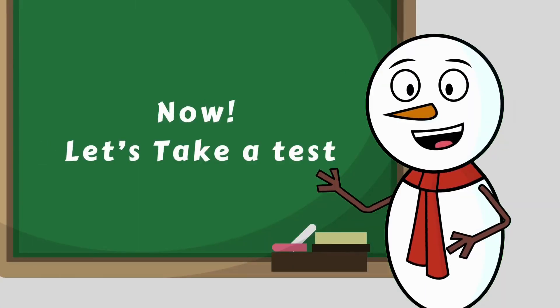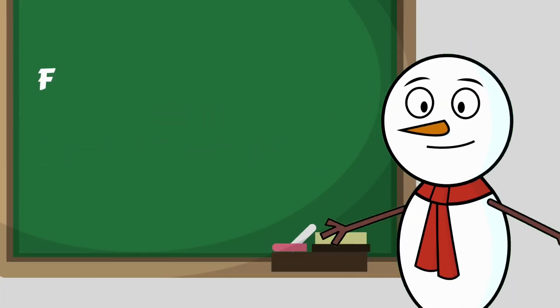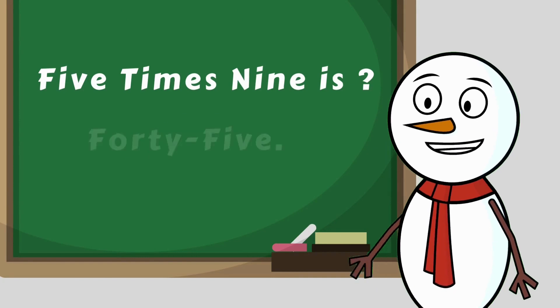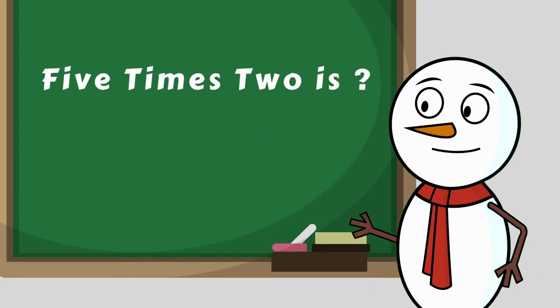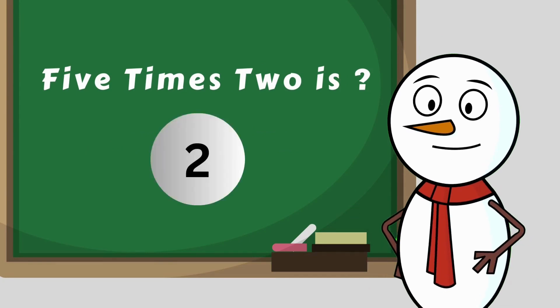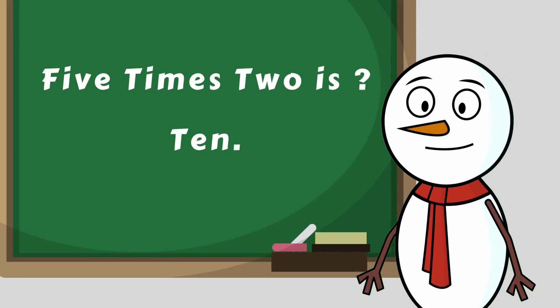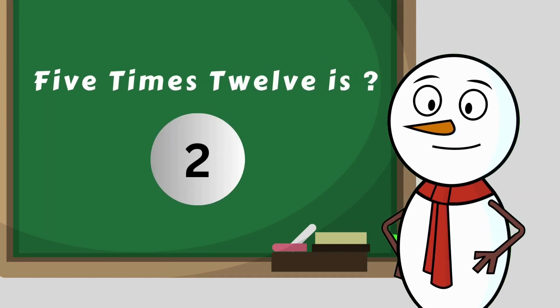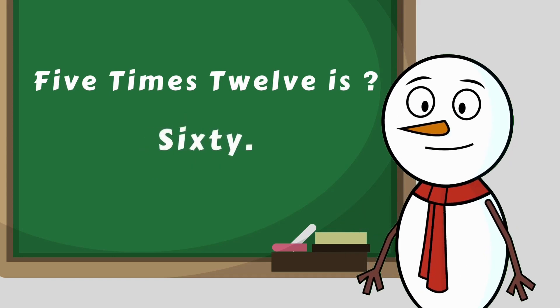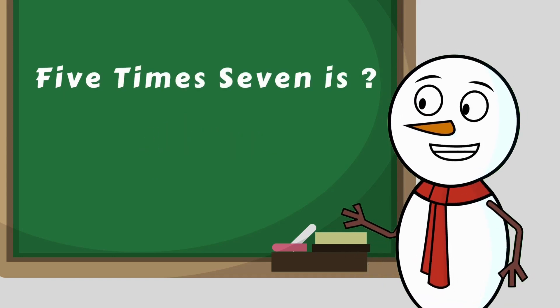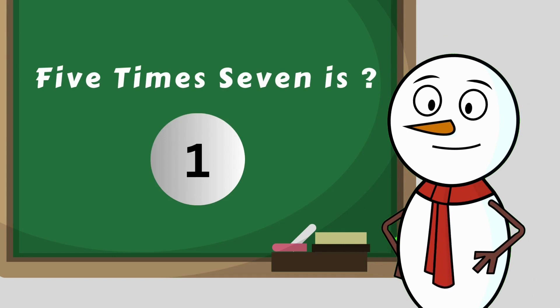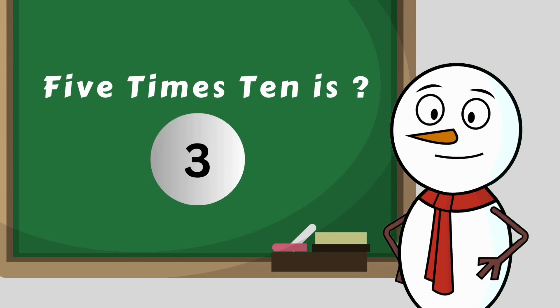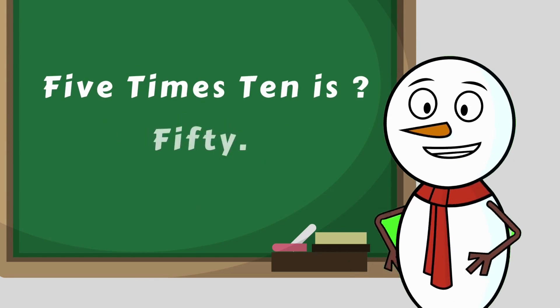Now, hey! Let's take a test. 5 times 9 is... 45. 5 times 2 is... 10. 5 times 12 is... 60. 5 times 7 is... 35. 5 times 10 is... 50.